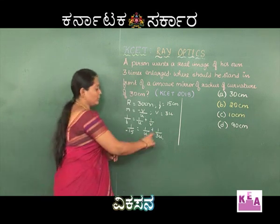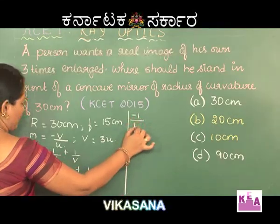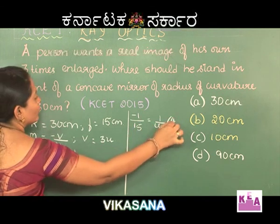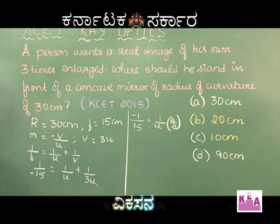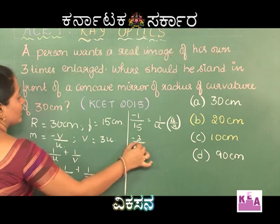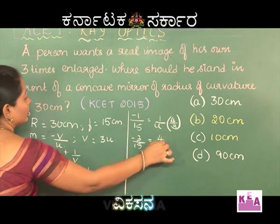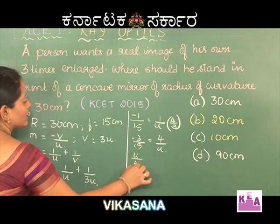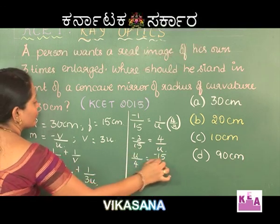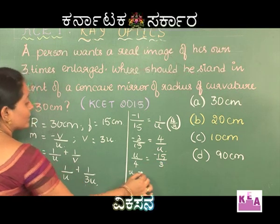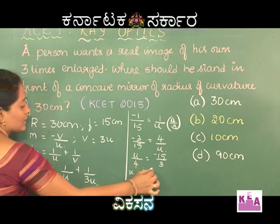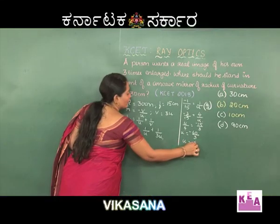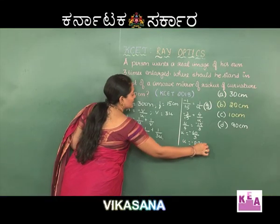This gives us minus 1 by 15 equal to 1 by u multiplied by 4 by 3. Now cross multiplying, we get minus 3 by 15 equal to 4 by u, or u by 4 equals minus 15 by 3, so u equals minus 60 by 3, which is equal to minus 20 centimeters.